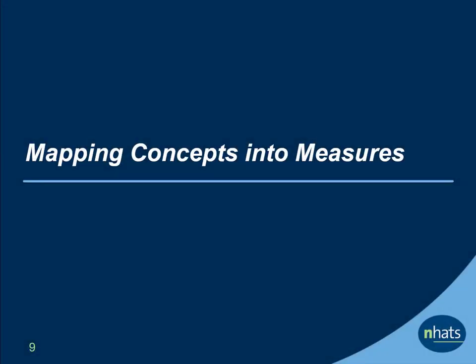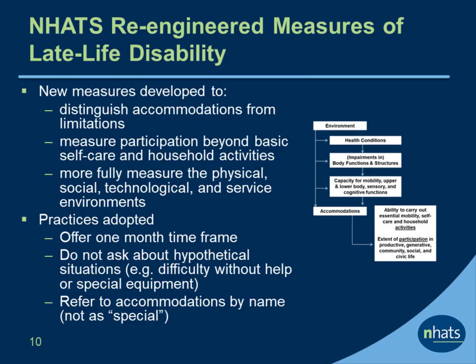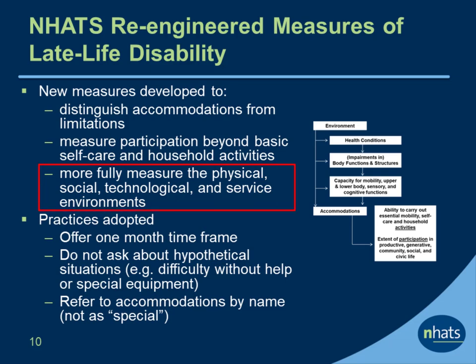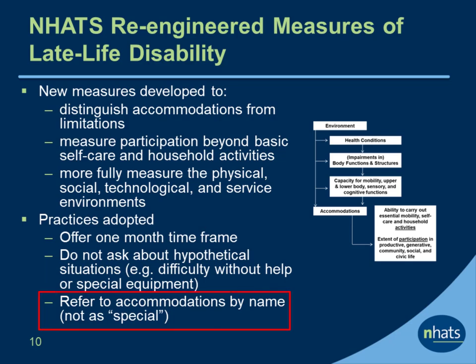Next, let's take a look at how the concepts in NHATS map into measures. NHATS has re-engineered the traditional measures of late-life disability to support research with the NHATS Disability Framework. New measures were developed and tested to distinguish accommodations from limitations, measure participation in valued activities, and more fully measure the physical, social, technological, and service environments in which older adults live. NHATS adopted best practices for measurement including offering respondents a recent time frame, not asking respondents to report about hypothetical behaviors — for instance, difficulty without help or special equipment — and referring to accommodations by name instead of as special.